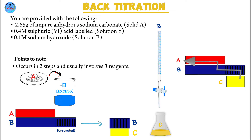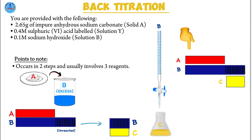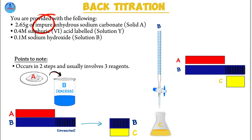You start with C, move on to B, and lastly get A. This is the model that summarizes back titration: A reacts with B, but because B is in excess, only part of it reacts with A. The shaded part is the excess, and it's the one that reacts with C. Back titration is necessary when dealing with a substance that is not soluble in water and cannot form a solution, or when dealing with a substance that contains impurities that would interfere with normal titration.